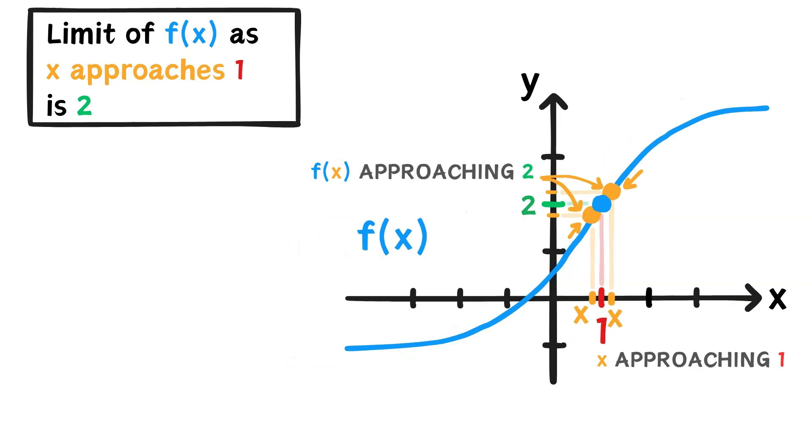To notate a limit, first we write LIM for limit. And under this, we put the x point and an arrow pointing towards the value it's approaching. To the right of this, we put our function.